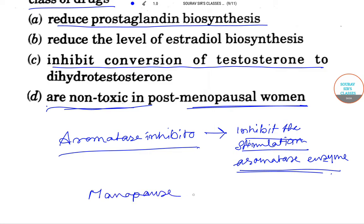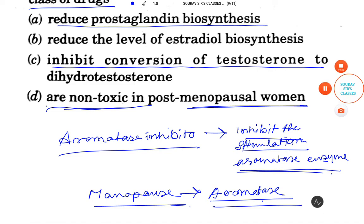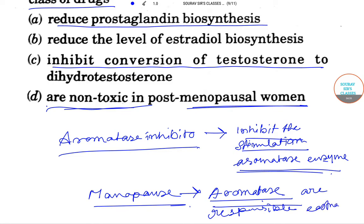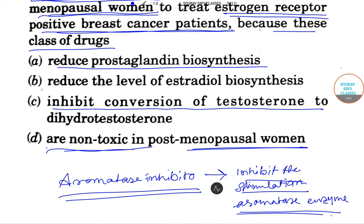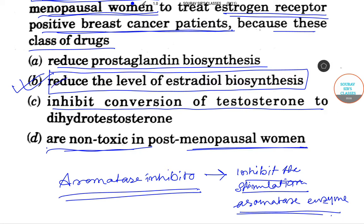Following menopause, the aromatase enzyme is responsible for circulating estrogen. So to reduce the level of estrogen, we use aromatase inhibitors. Therefore, the answer is option B — reduce the level of estradiol biosynthesis. That is the correct answer.